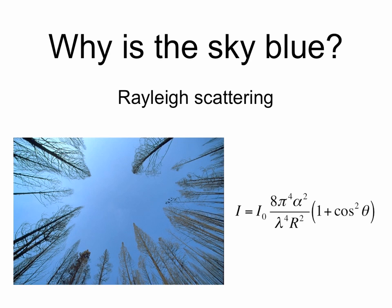Why is the sky blue? The sky's blueness can be explained by Rayleigh scattering. Light with shorter wavelengths gets scattered more. Here's the equation for Rayleigh scattering, and notice the cosine squared term.